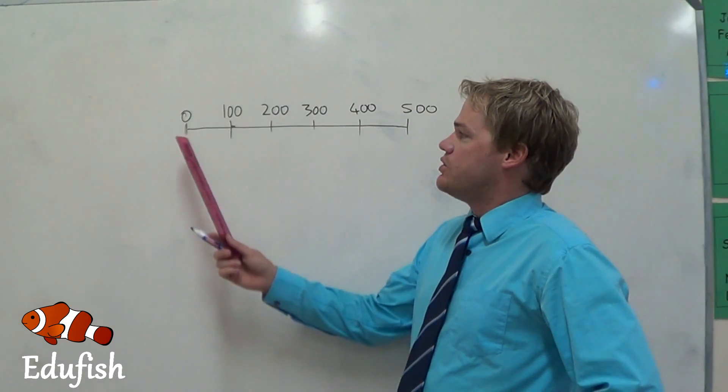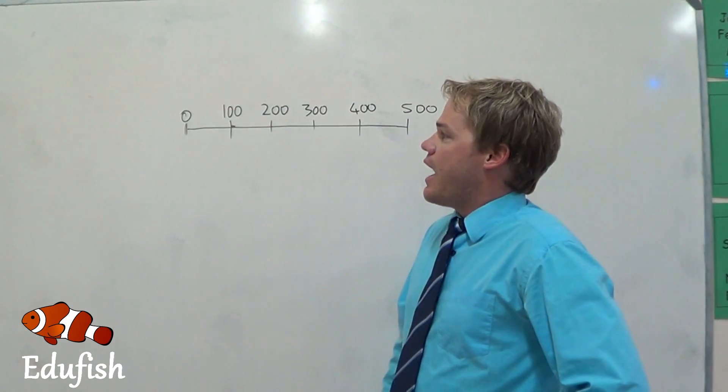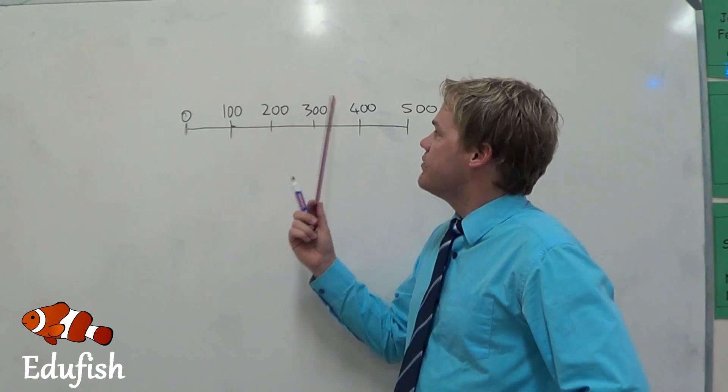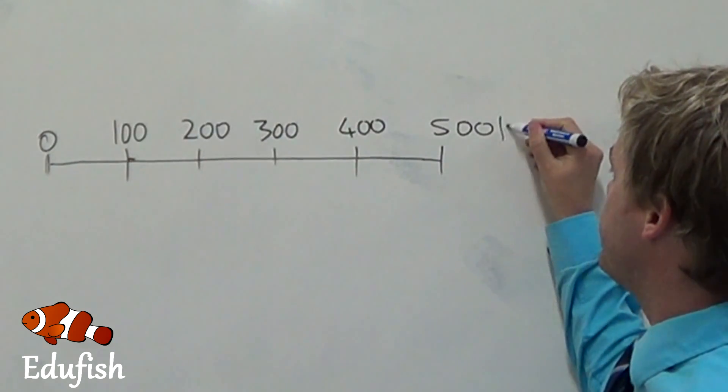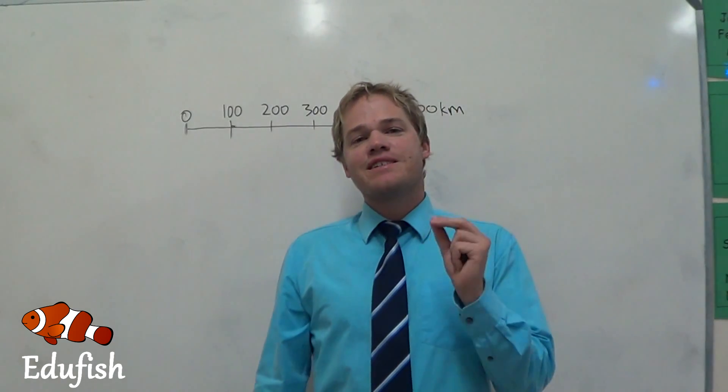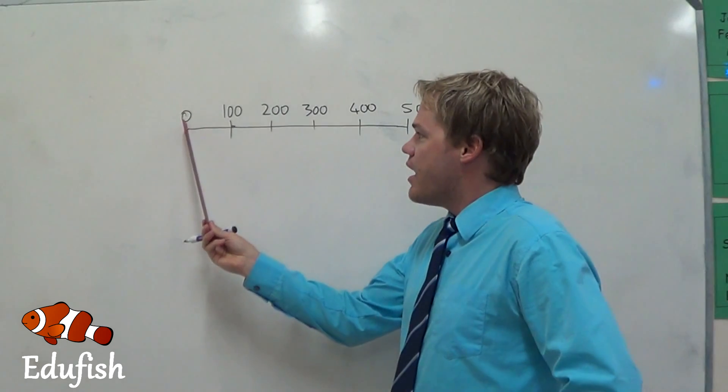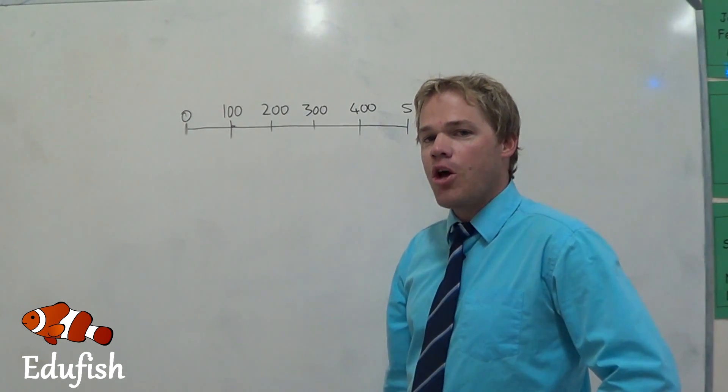As you can see here, I just drew the line scale over on the whiteboard. Like I said, 0, 100, 200, 300, 400, and 500 kilometers. I forgot to put the unit of measurement in there.